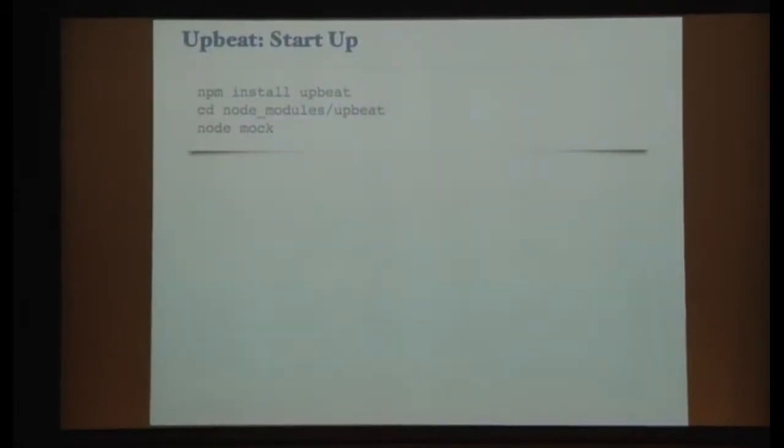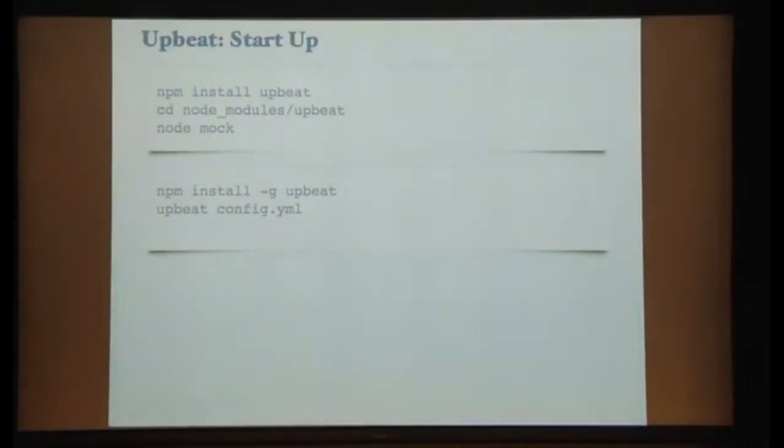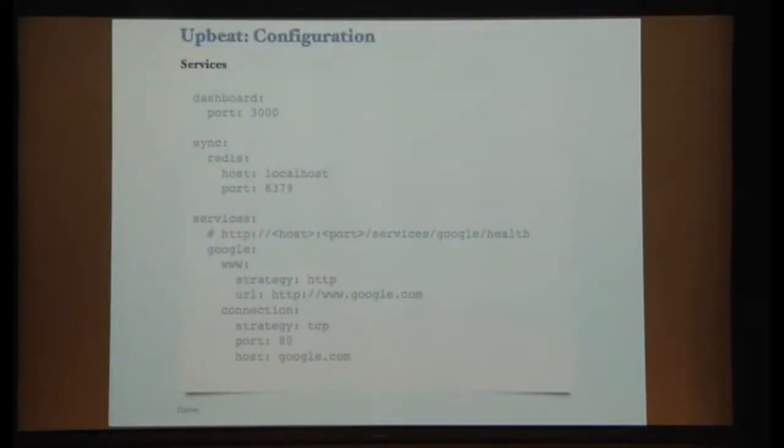Okay, so to run Upbeat, you just install it with npm. You'd probably want to do install dash g and run Upbeat and you pass in a config file. And from this config file, it'll know how to do all the health checks. Here's an example of the config file. So above you just say, you give it a port number if you want the dashboard. You can also run Upbeat without a dashboard and you can use the server directly. And then if you want to actually persist the data, you have a place there called sync and you give it the Redis address and port.